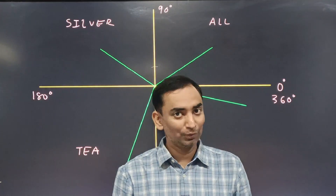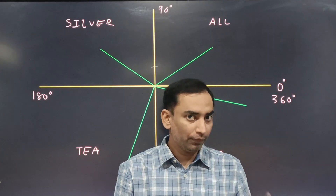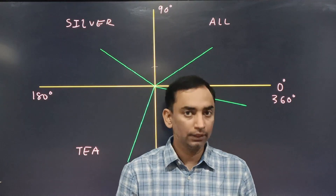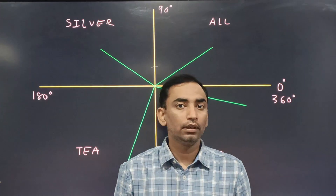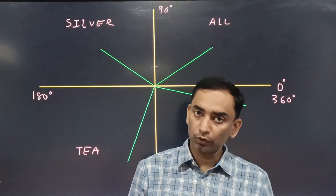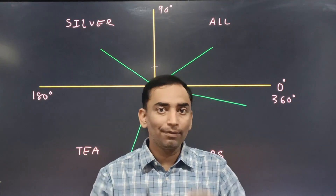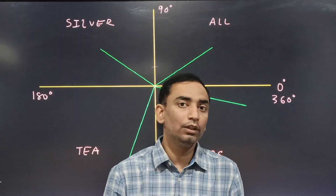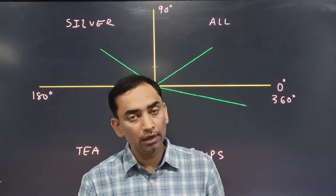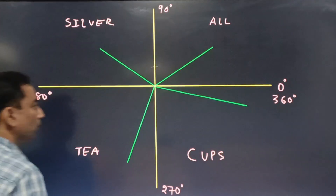Hello everyone, this is Part 2 of trigonometric identities. Here I'm going to teach you a very simple concept: if you are given any angle from 0 to 360 degrees, how can you identify whether the sine, cosine, and tangent of that angle are going to be positive or negative, depending on where the angle lies.